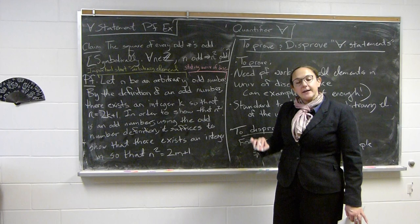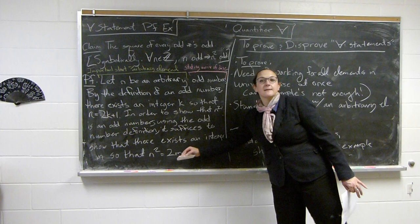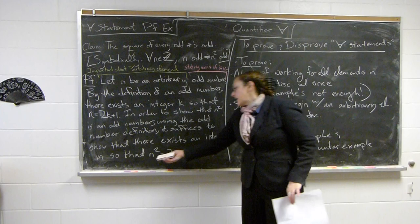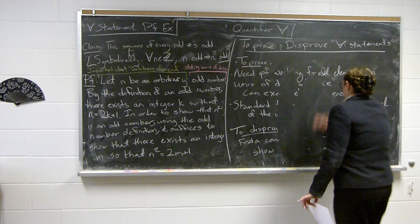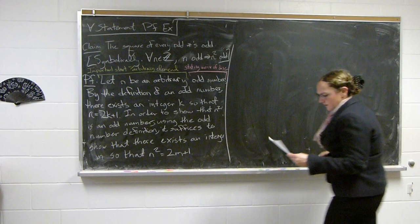To prove the existence statement, you state an example and then show it works. In the scratch work you find the example, but in the final proof you just state what m is and verify it works — meaning n² equals 2m plus 1 and m is an integer.